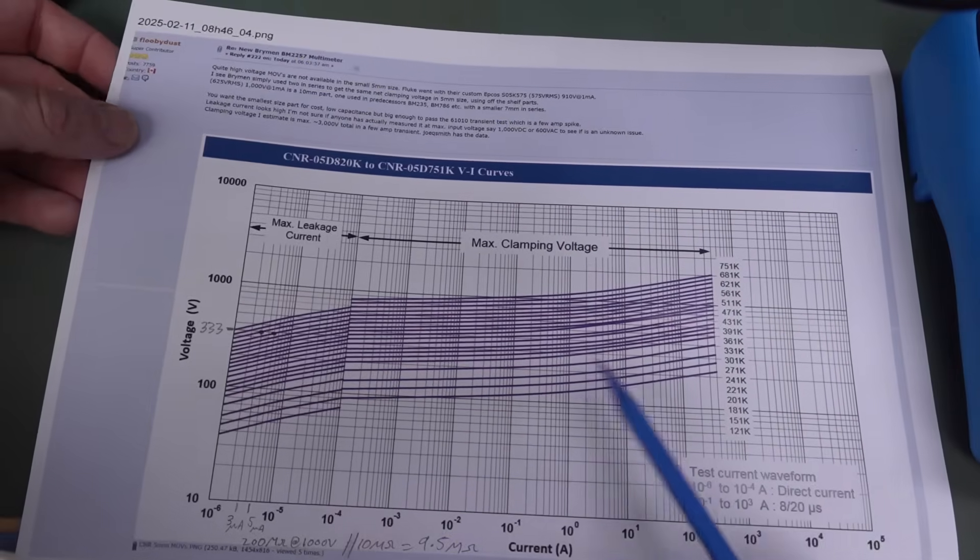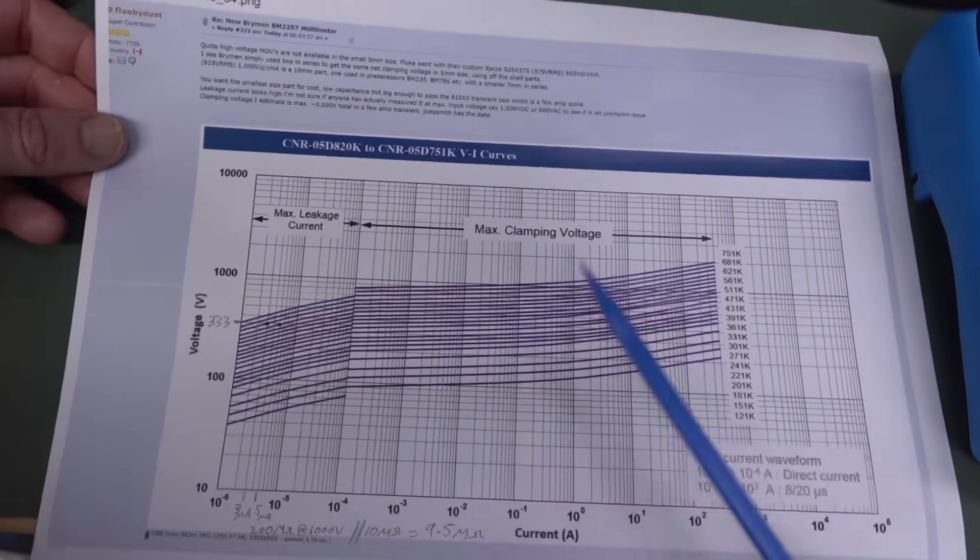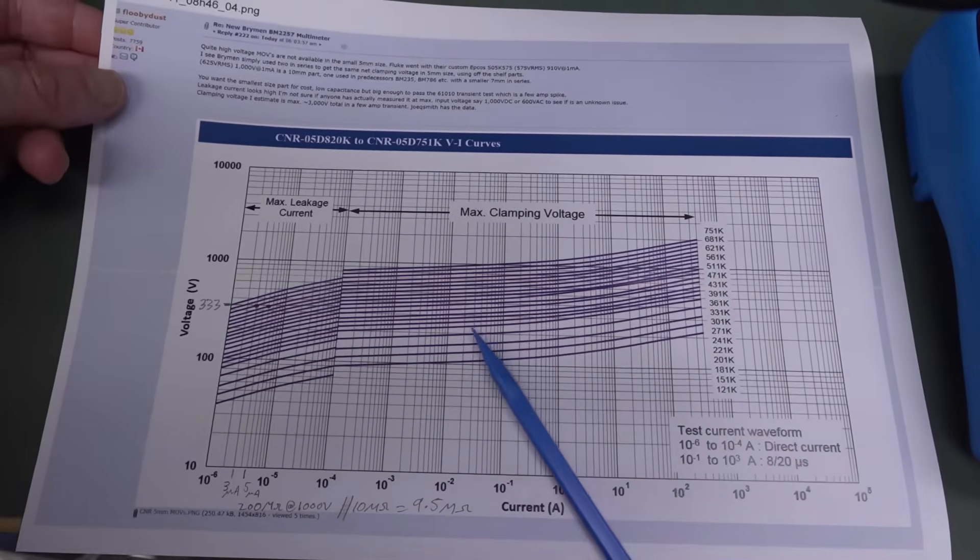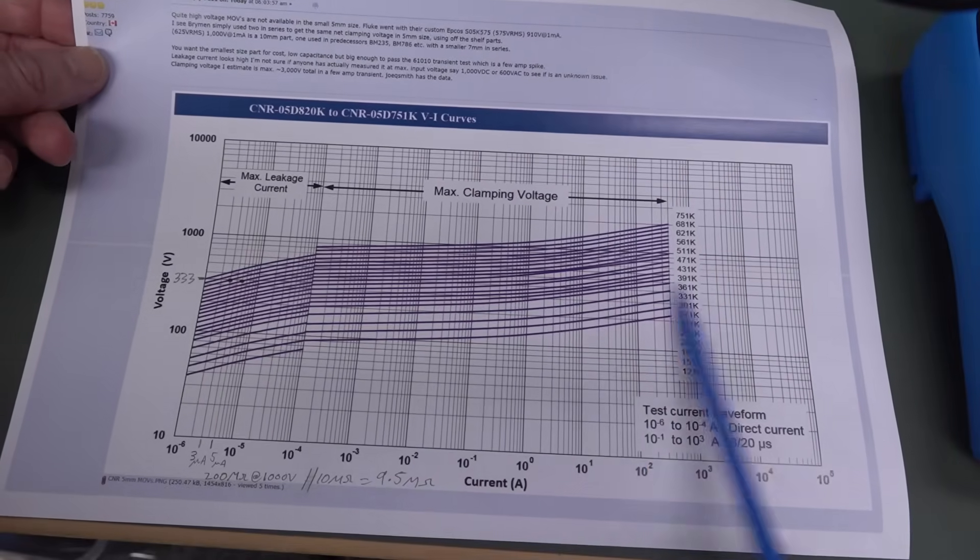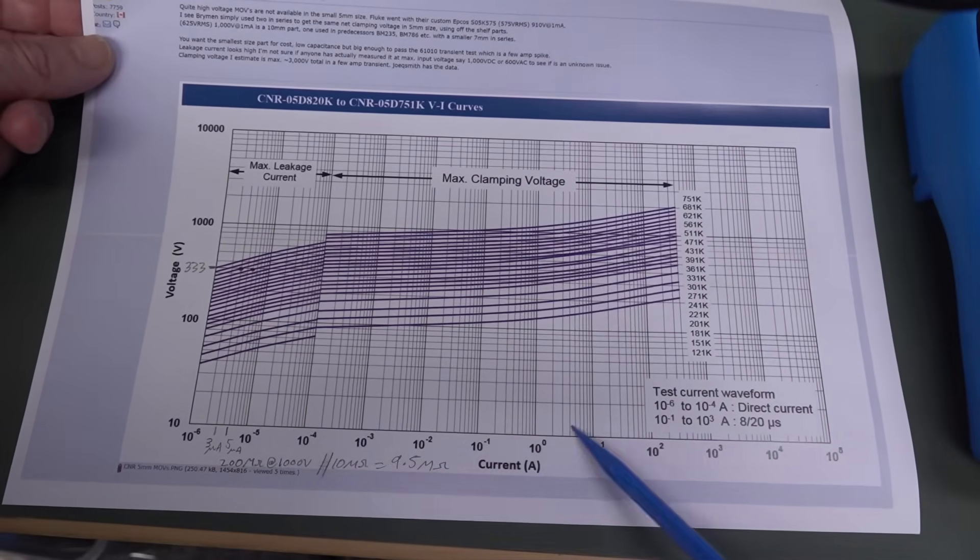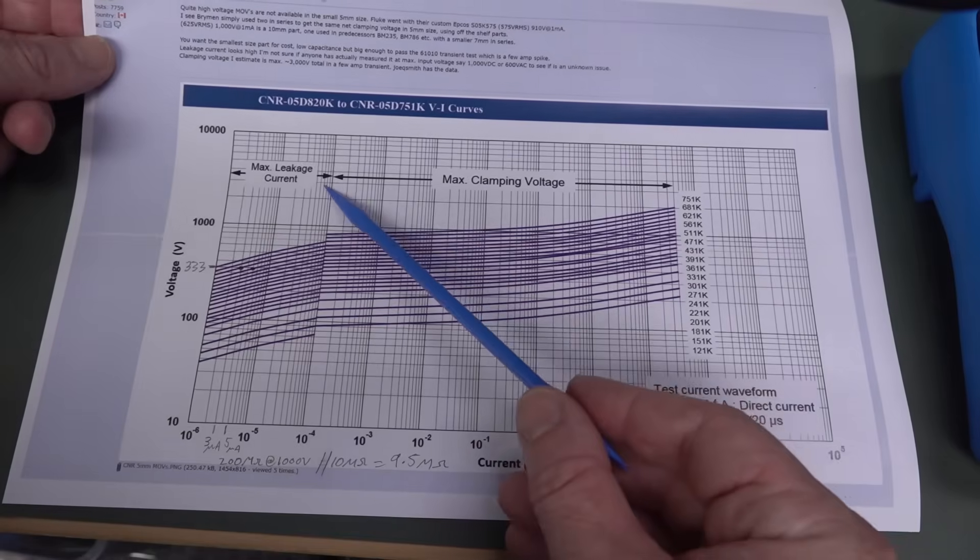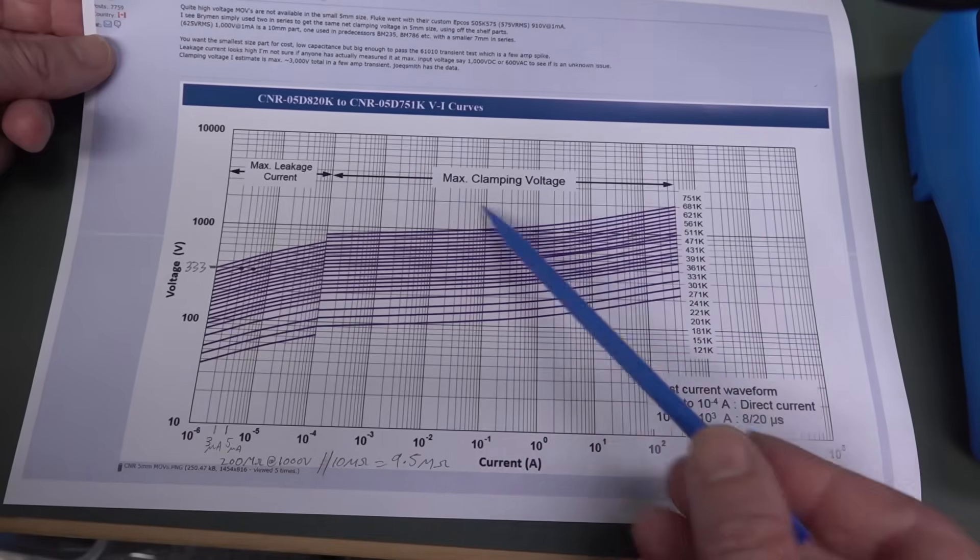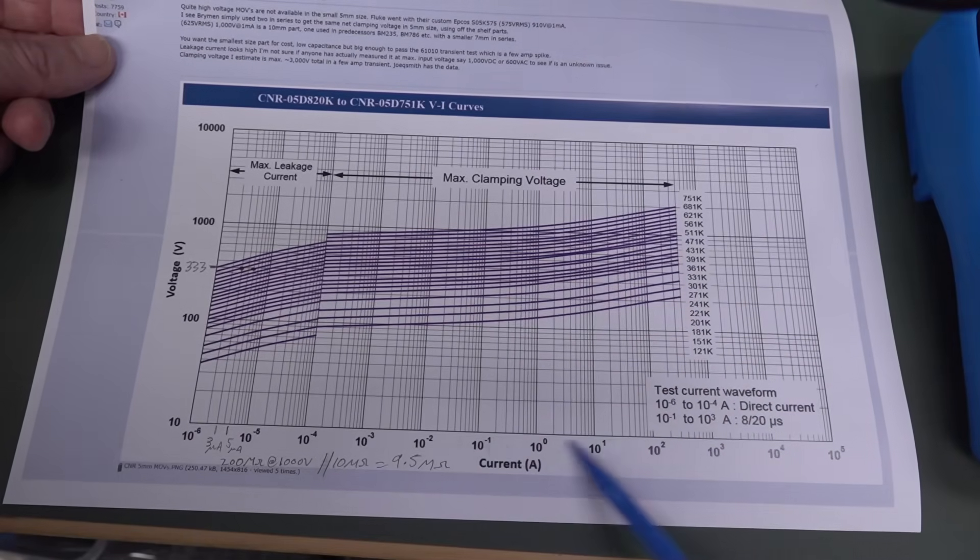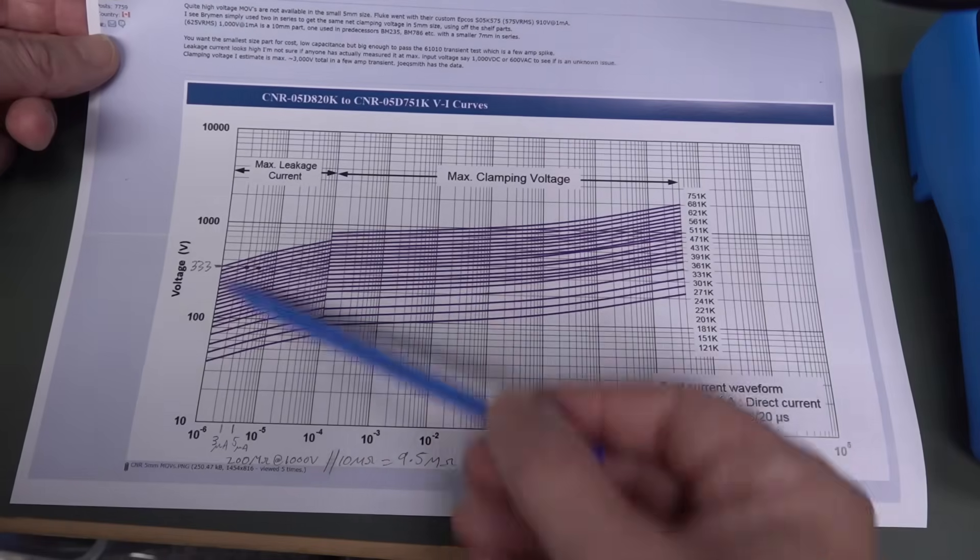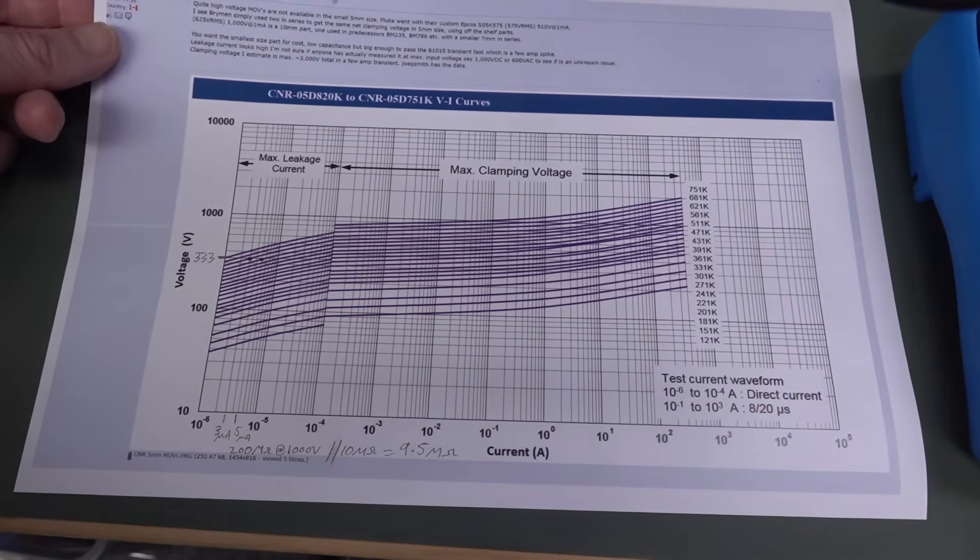So you can actually get this entirely from the data sheet, and this is the post by Flubby Dust. I'll link the data sheet down below for these CNR brand MOVs. It has these characteristic curves in here, which is basically voltage versus current down here. And this is, they've split it down here. You can see this is when it's at max clamping voltage.